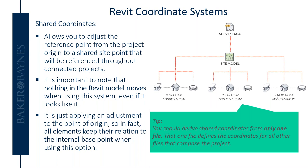Just a tip: you should only derive your coordinates from one file, and that one file defines the coordinates for all the other files that compose the project. If you look at this flowchart, you'll see that the site model is typically the holder of your shared coordinate system, and the file coordinates are then derived from there.